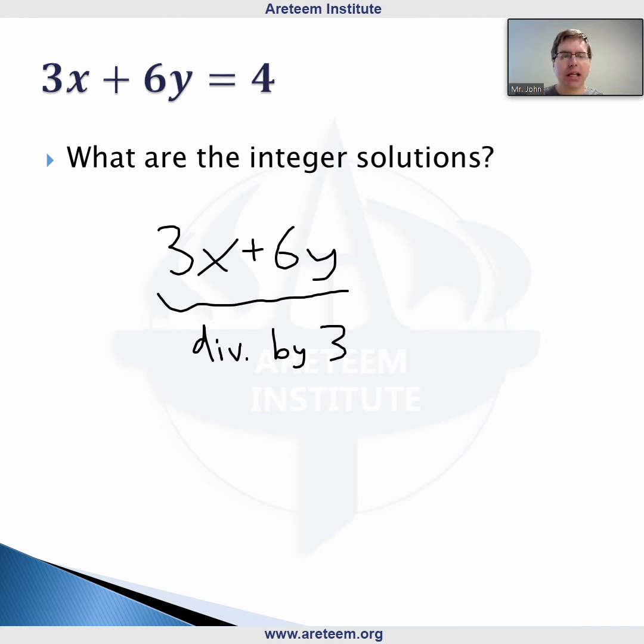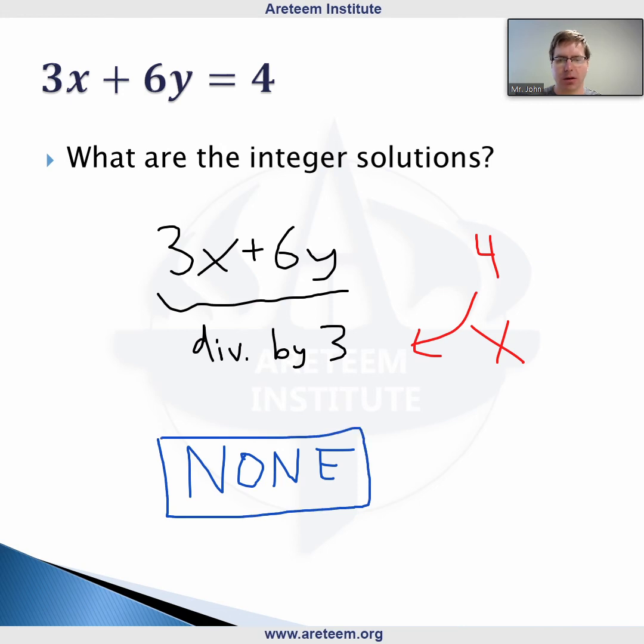Is 4 divisible by 3? No, 4 is not divisible by 3. In fact, we have no solutions in this case. There are no integers x and y where 3x plus 6y equals 4. This is one big difference from linear equations. This is fully solvable with a line if you have fractions, but there are no integer solutions.